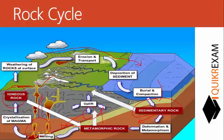If igneous rock gets exposed to Earth's surface, it is called igneous rock. If igneous rock goes deeper into Earth's surface and is subjected to high pressure, it can also be converted into metamorphic rock. This is the cycle — igneous rock can be converted into metamorphic rock, and metamorphic rock can be converted back into igneous rock through this cycle.